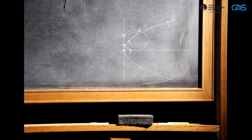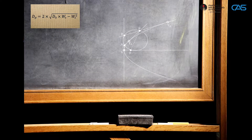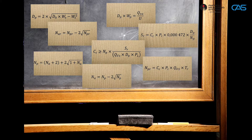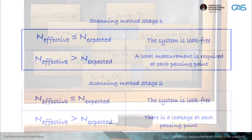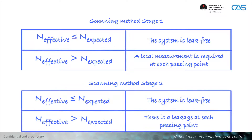Following the measurement, the expected amount of particles is determined based on complex calculations depending on the raw air and filter class. The evaluation then takes place as follows: the effective number of particles is compared with the expected number of particles. As long as the effective number of particles is less than or equal to the expected number, the system is leak-free.